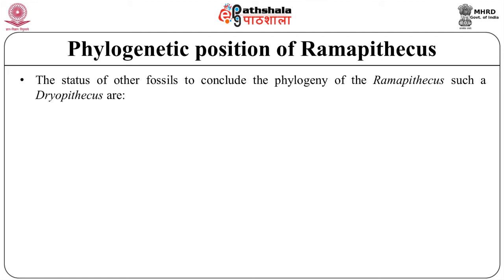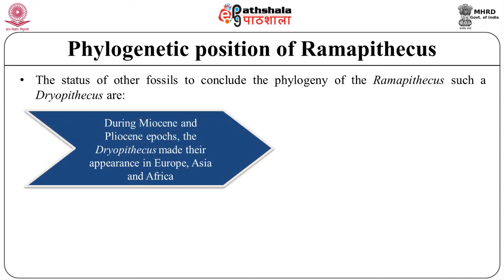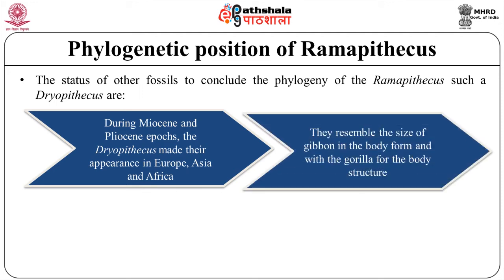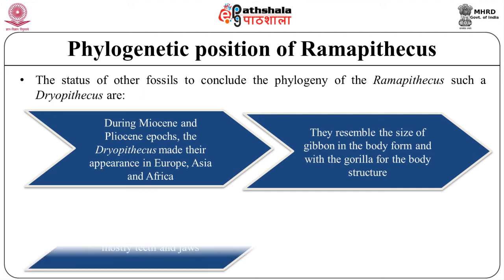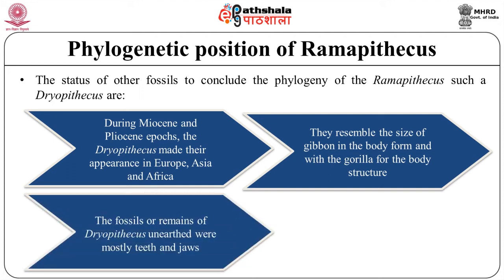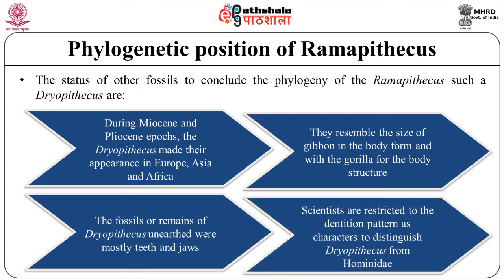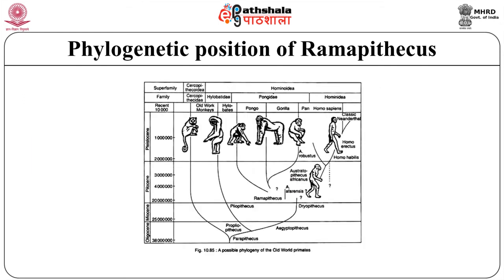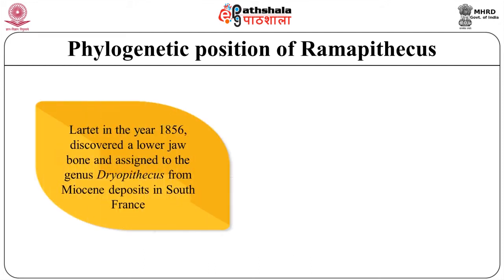We need to understand the status of other fossils to conclude the phylogeny of Ramapithecus — such as Dryopithecus. During Miocene and Pliocene epochs, Dryopithecus made its appearance in Europe, Asia, and Africa, resembling the gibbon in body form and the gorilla in body structure. The fossil remains of Dryopithecus unearthed were mostly teeth and jaw, so scientists are restricted to dentition patterns as characters for distinguishing Dryopithecus from Hominidae. Gregory and Hellman concluded that Dryopithecus was the common ancestor of the anthropoid apes and humans. Lartet in 1856 discovered a lower jaw and assigned it to the genus Dryopithecus from Miocene deposits in south France.